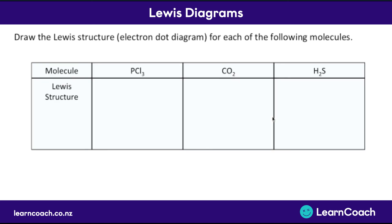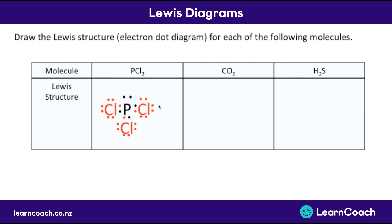Let's look at a question now. We need to draw the Lewis structure — also called an electron dot diagram — for each of the following molecules. For PCl3: using the periodic table, P has five electrons in its outer shell, and Cl each has seven in their outer shells. Each chlorine atom wants to share one more from P, and P wants another three, so this works out perfectly. We share one electron each between the P and each of the Cl's.